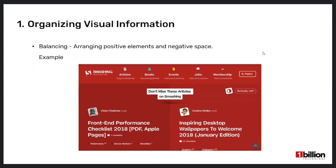First I will explain about how we can organize visual information in UI. I will mainly focus on four principles: balancing, rhythm, harmony, and dominance. The first one is balancing. This means arranging positive elements and negative space so both areas are not going to overpower the others. It makes sure everything works together and fits together.